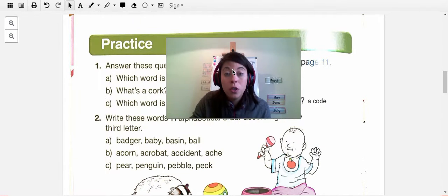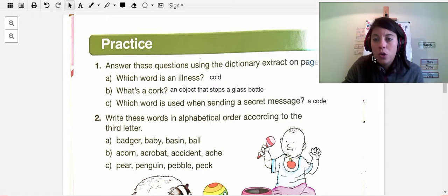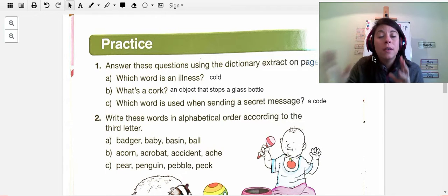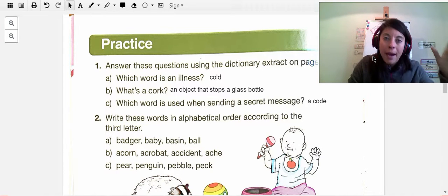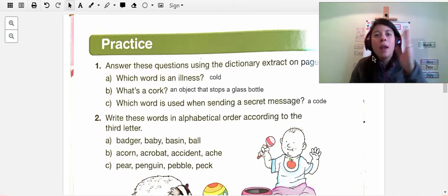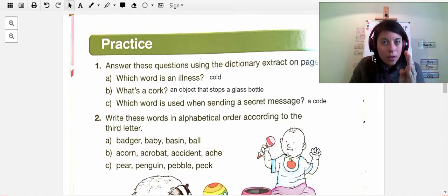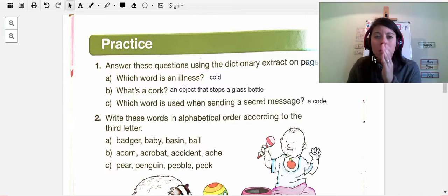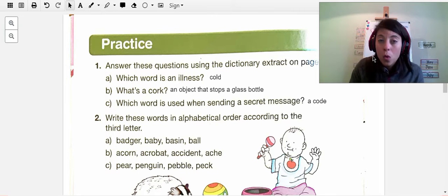So we were talking about dictionaries and how we use dictionaries and how dictionaries put words in alphabetical order from A to Z. If the first letter is the same, then you go to the next letter, and if the next letter is the same, then you go to the third letter to put words in alphabetical order.